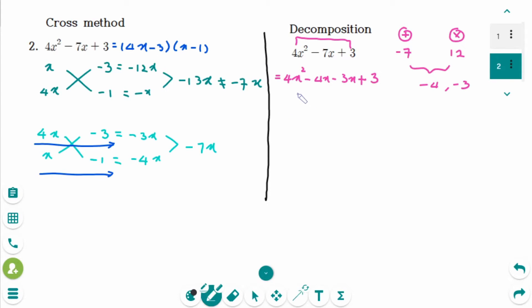And then factor out first two terms. 4x squared minus 3. So x minus 1. And then take a common factor. x minus 1. So 4x minus 3 is left over. So 4x minus 3, x minus 1.